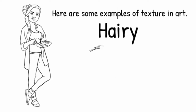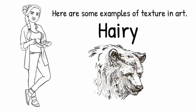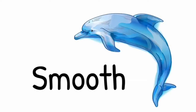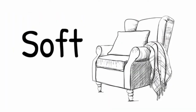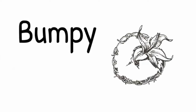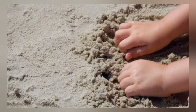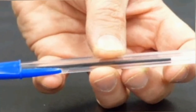Some examples of texture in art include the hairy texture, the smooth texture, the soft texture, bumpy texture, and rough texture. When an object is touched, it can appear in any of these forms.